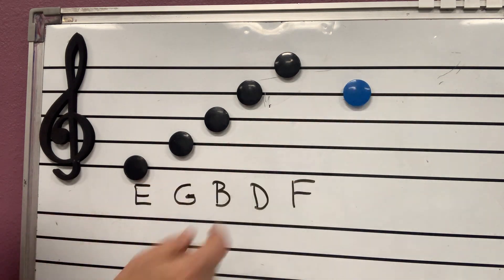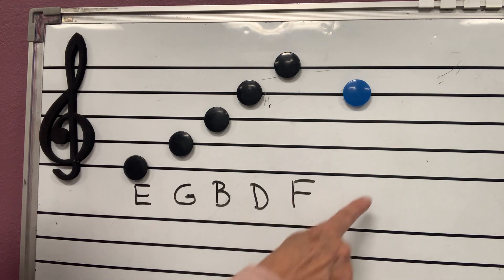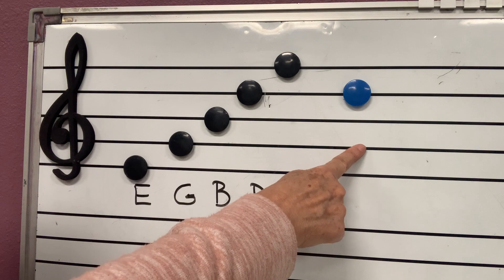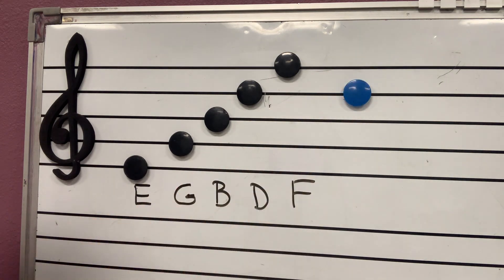Let's say you see a note right here. And I ask you, who's that note? You're like, I don't know. All you have to do is think. Is that a line or a space? It's a line. What do you say on the lines? So, you count. Every girl bakes delicious. Oh, that's a D. See? Then you know that that's a D.